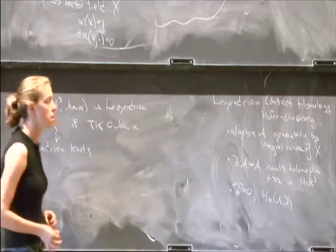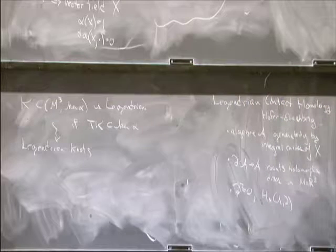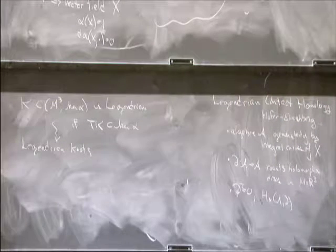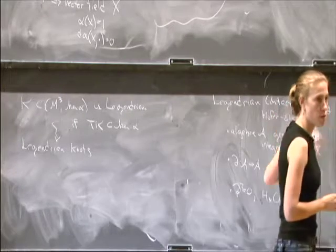What Josh and I did is we defined a knot invariant, so an invariant for Legendrian knots, which you can think of as a combinatorial model for the object over here on the left.